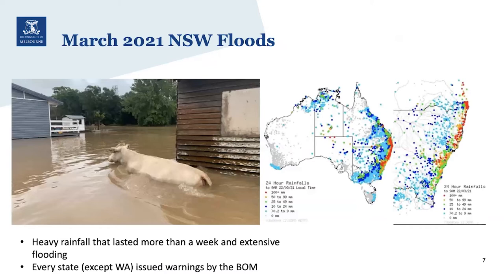Heavy rainfall lasted more than a week, and the plot on the right shows rainfall totals from weather stations across the country. Those red dots indicate places where there was more than 100 millimetres in 24 hours. Every state except WA received a warning from the Bureau of Meteorology, and Sydney's Observatory Hill weather station received 110 millimetres in 24 hours — about one-sixth of Melbourne's average annual rainfall.